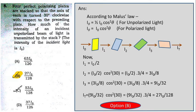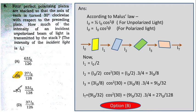How much of the intensity of an incident unpolarized beam of light is transmitted by the stack? Initially the light is unpolarized with intensity I₀. According to Malus's formula, for unpolarized light: I_θ = (1/2) I₀ cos²θ, and for polarized light: I_θ = I₀ cos²θ. After passing through the first polarizer, I₁ = I₀/2, since cos²(0°) = 1.